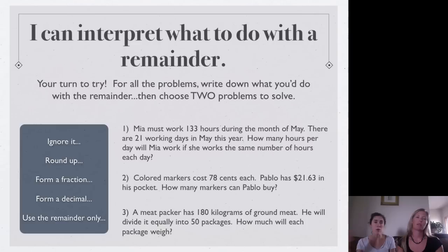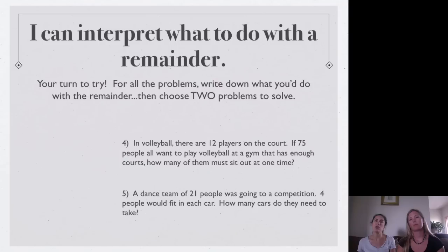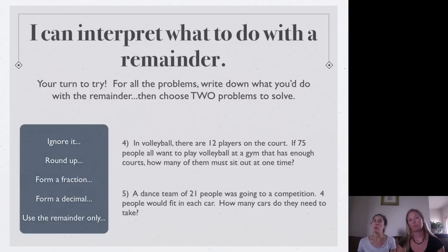Would you ignore it? Would you round it up? Would you form a fraction? Would you form a decimal? Would you just use the remainder? That's what you need to determine for all five. But then, you only have to actually choose two problems to solve them. Correct. Okay. So, you'll have the numbers one through five, and you'll have these words next, like one of these phrases will go next to each one, but then two of them will actually have an answer to it. And you can pick whichever two you want. So, good luck. Yep. Yep.